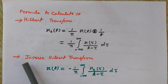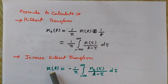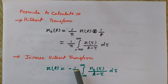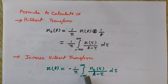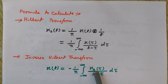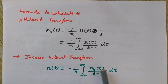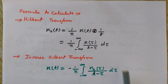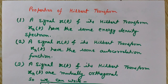Now let's see how to calculate the inverse Hilbert Transform. If you want to get back x(t) from its Hilbert Transform, you use the formula: x(t) equals minus (1/π) · integral from minus infinity to infinity of x̂(τ) divided by (t minus τ) dτ, integrated with respect to τ from minus infinity to infinity. This gives you the signal x(t) back from its Hilbert Transform.